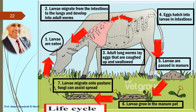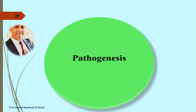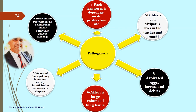Pathogenesis of verminous bronchitis: each lung worm depends on its predilection site. Dictocaulus filaria and Dictocaulus viviparus live in the trachea and bronchi. Aspirated eggs, larvae, and debris affect a large volume of lung tissue. The volume of damage is usually insufficient to cause severe dyspnea alone; however, heavy mixed protozoal infection can impair pulmonary gas exchange.